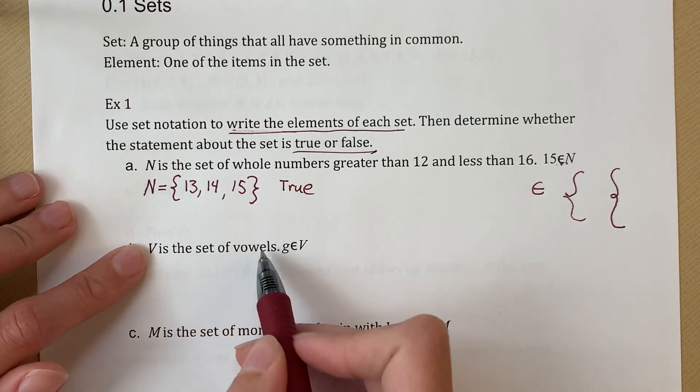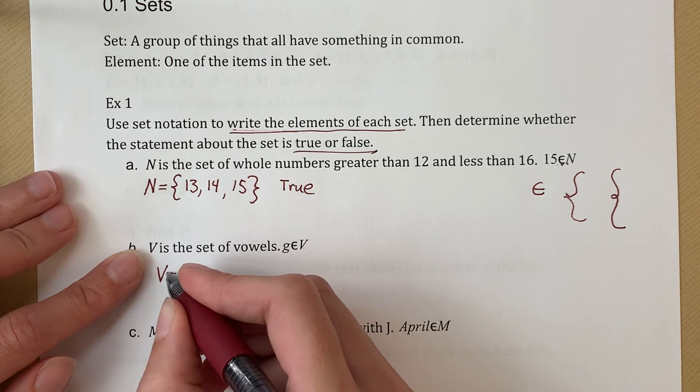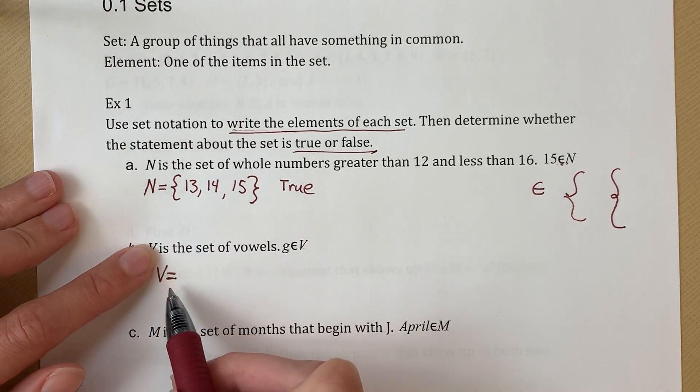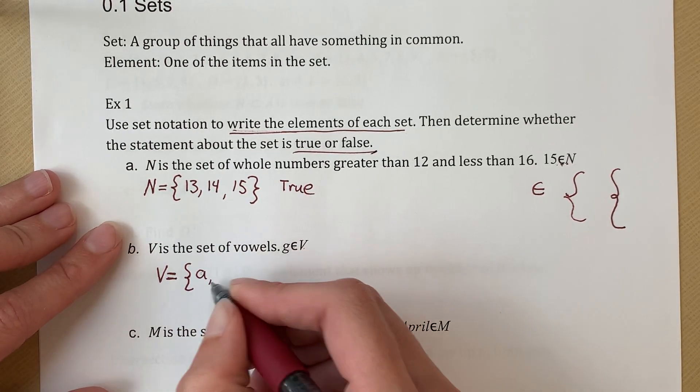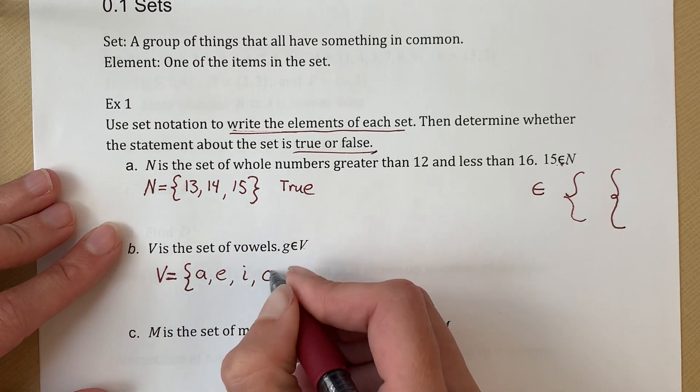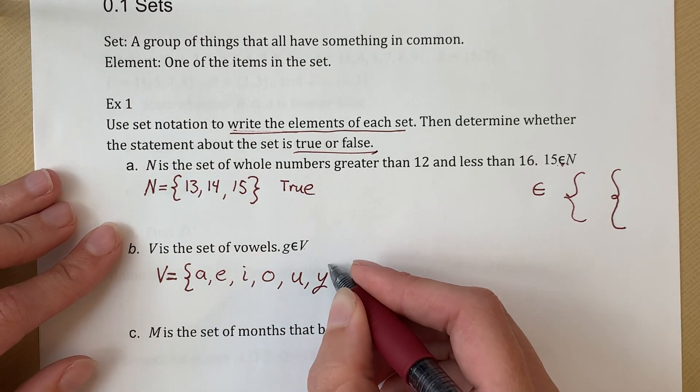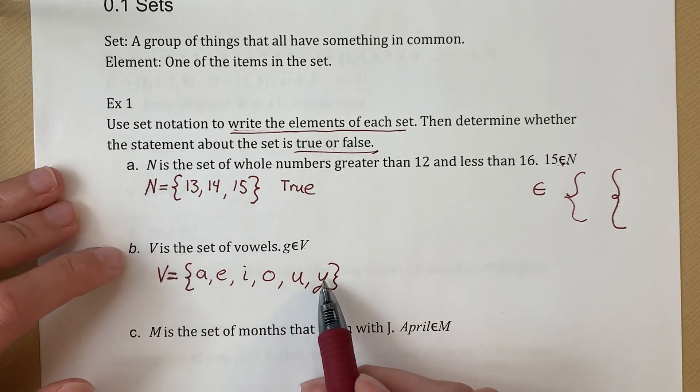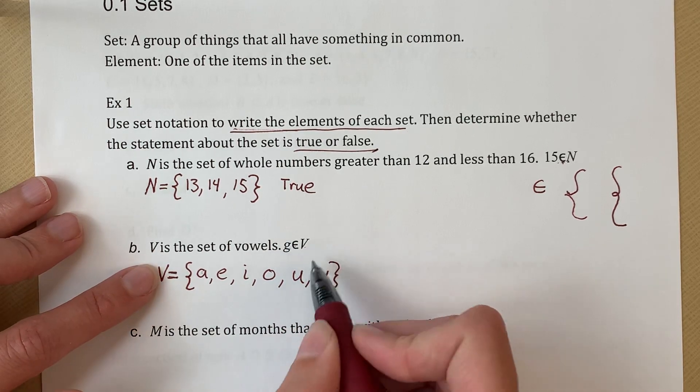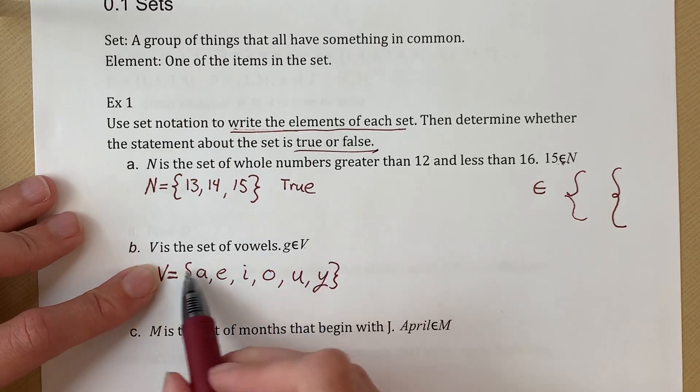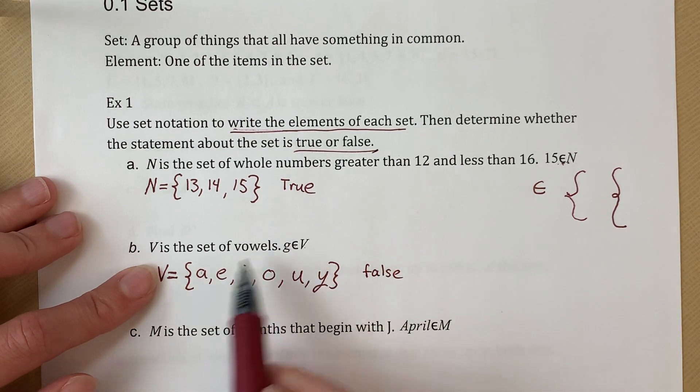Next, V is the set of vowels. And then G is the element of V. So we're going to say V is. Usually when you see is in math, it means an equal sign. So V is the set of vowels. So our vowels are A, E, I, O, U, and sometimes Y. So A, E, I, O, U, sometimes Y. Those are our vowels. And we want to say, okay, is G an element of V? Is G an element of this set? And the answer is no or false. Obviously, G isn't a vowel.